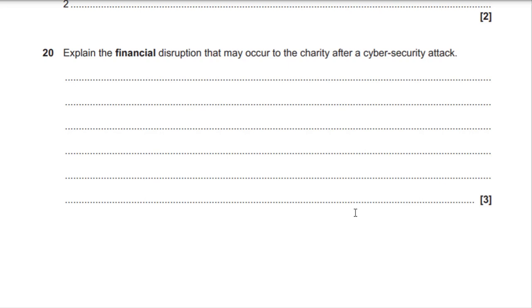Question 20 — three marks. Explain the financial disruption that may occur to the charity after a cyber security attack. One mark for identification, remaining marks for explanation. Options: money could be lost or stolen in a targeted attack on the charity's funds; the charity might have to spend money investigating the attack, impacting their income; they may have to spend money recovering data or improving data security; the charity might lose income due to donors losing trust because their personal data was stolen. Do not include ransom requests or GDPR fine implications — those are not accepted here.